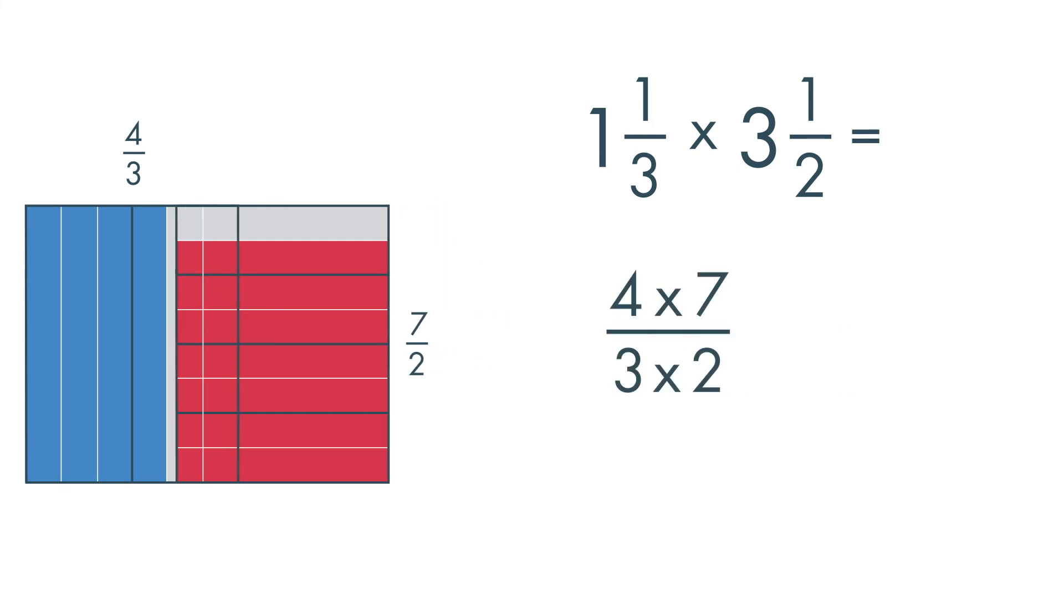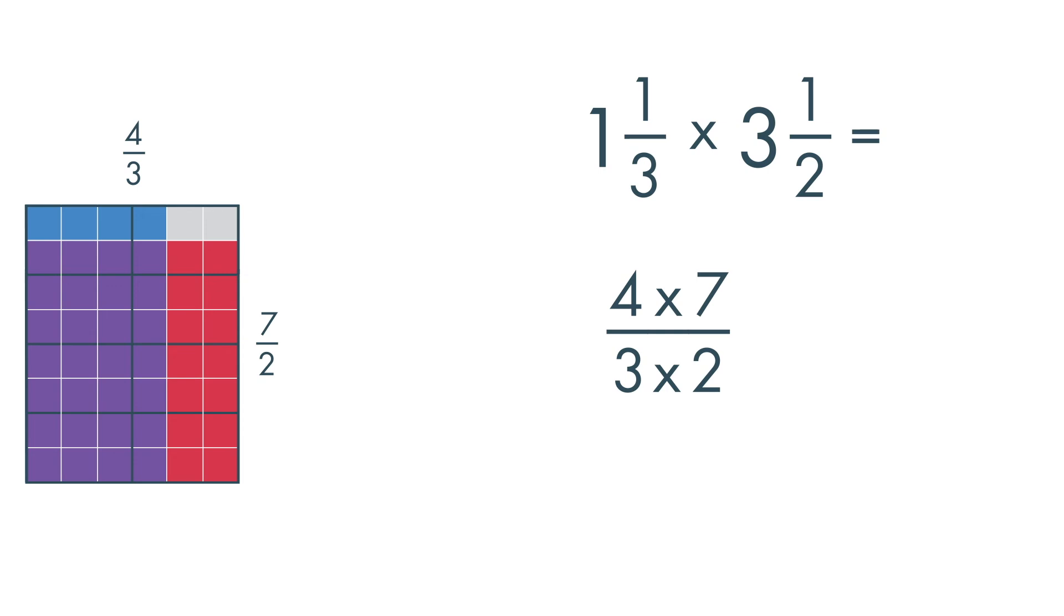Next, multiply the numerators and denominators. Four times seven is equal to twenty-eight. Three times two is equal to six.